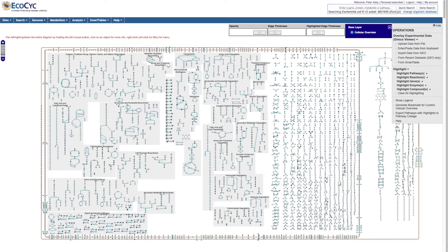Our first tool is called the Cellular Overview Diagram. It's an organism-specific metabolic map diagram that is zoomable and searchable.